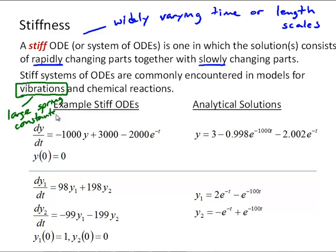In fact, the term stiffness comes from vibration models with large spring constants. When you have a large spring constant, or a stiff spring, you actually end up with a stiff system of differential equations in a vibration model. Here are some examples of stiff ODEs.